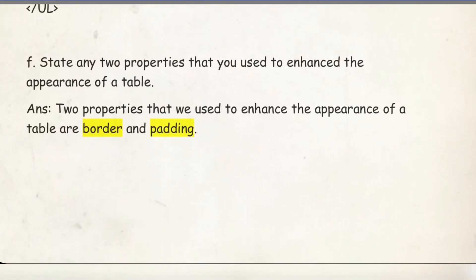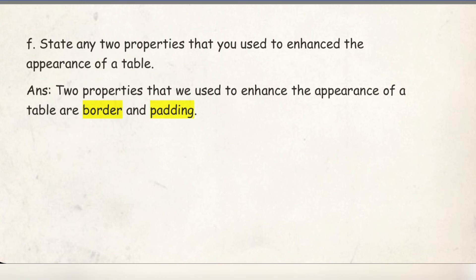Number F: State any two properties that you can use to enhance the appearance of a table. These two properties are border and padding. By default, when we create a table its border is not displayed. But if we need a border and padding, we can use these properties to enhance the appearance of the table.